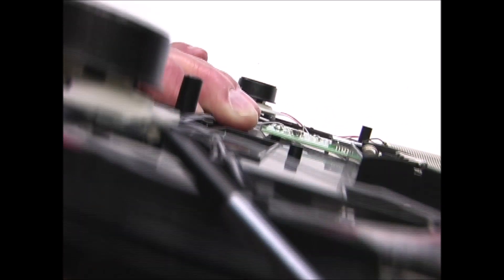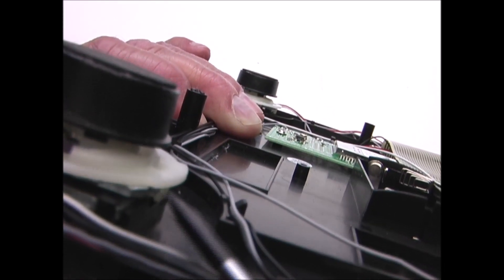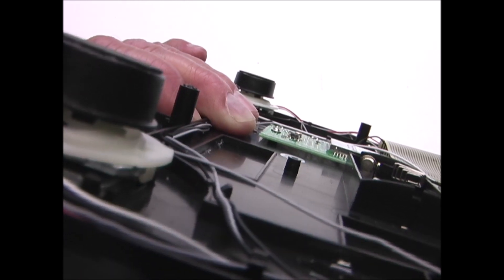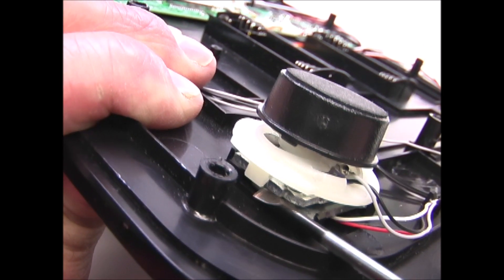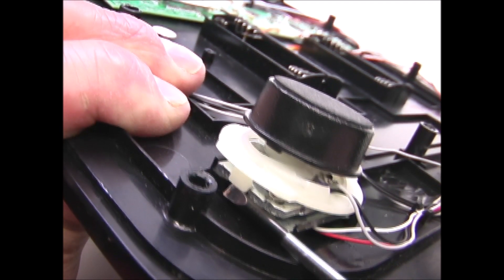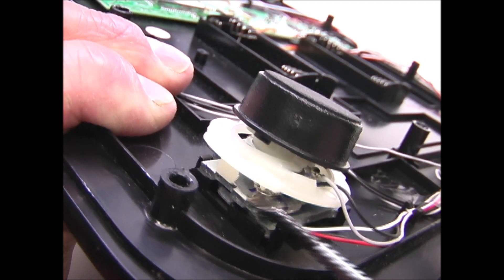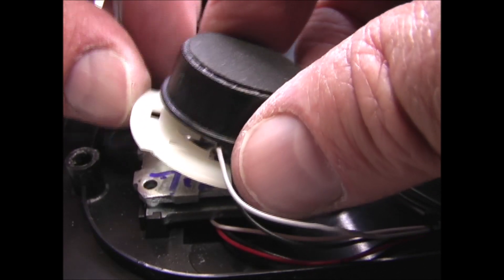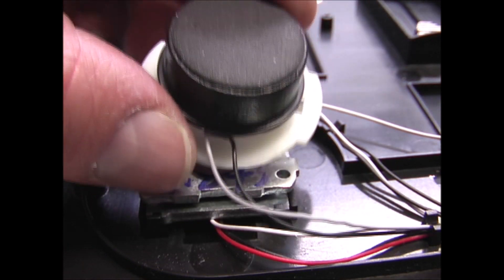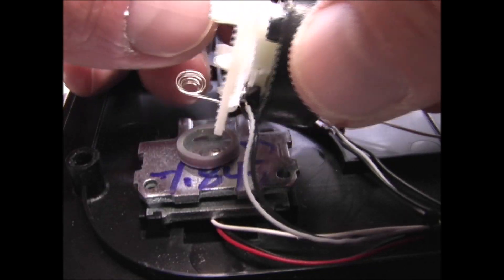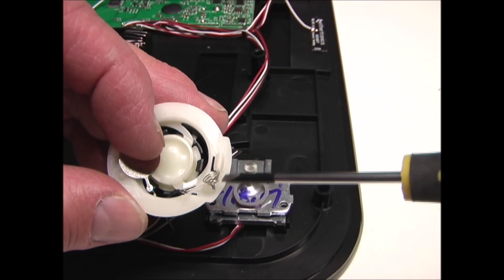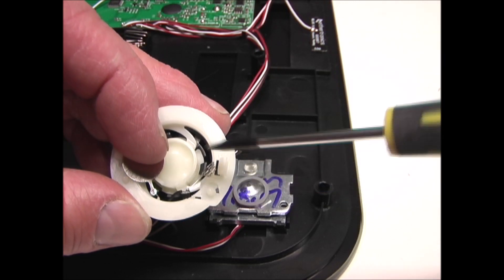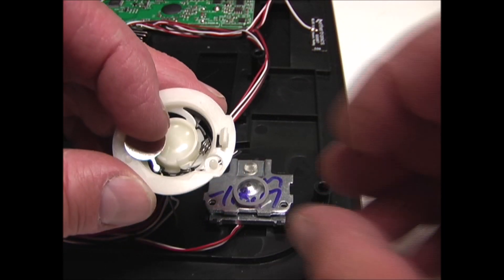On either side of this plastic piece there's this little clip. So there's one on this side and one on this side. So I'm just going to pry those open and pop this off. There's a little coil wire on here and I'm just going to slide that out through the slot in the plastic part.